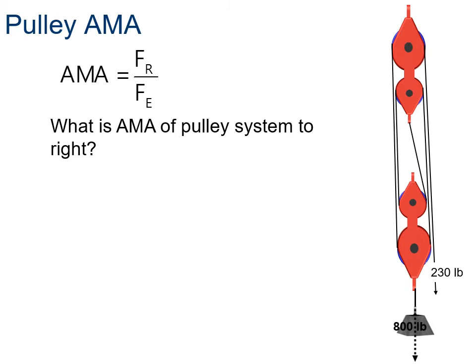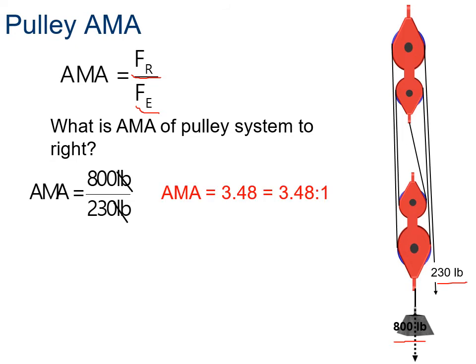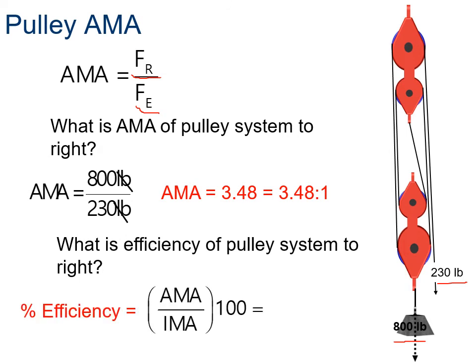The AMA of a pulley is FR, resistance force, divided by FE. What's the AMA of this pulley system that we have to the right here? Well, the AMA is FR, which is 800 pounds, divided by FE, which is 230 pounds. Pounds cancel out, that gives us an AMA of 3.48. What's the efficiency? Efficiency is AMA over IMA, so the AMA is 3.48 and the IMA that we calculated earlier was 4. So 3.48 divided by 4 times 100 gives us 87%. So our pulley efficiency is 87%, which is very efficient.